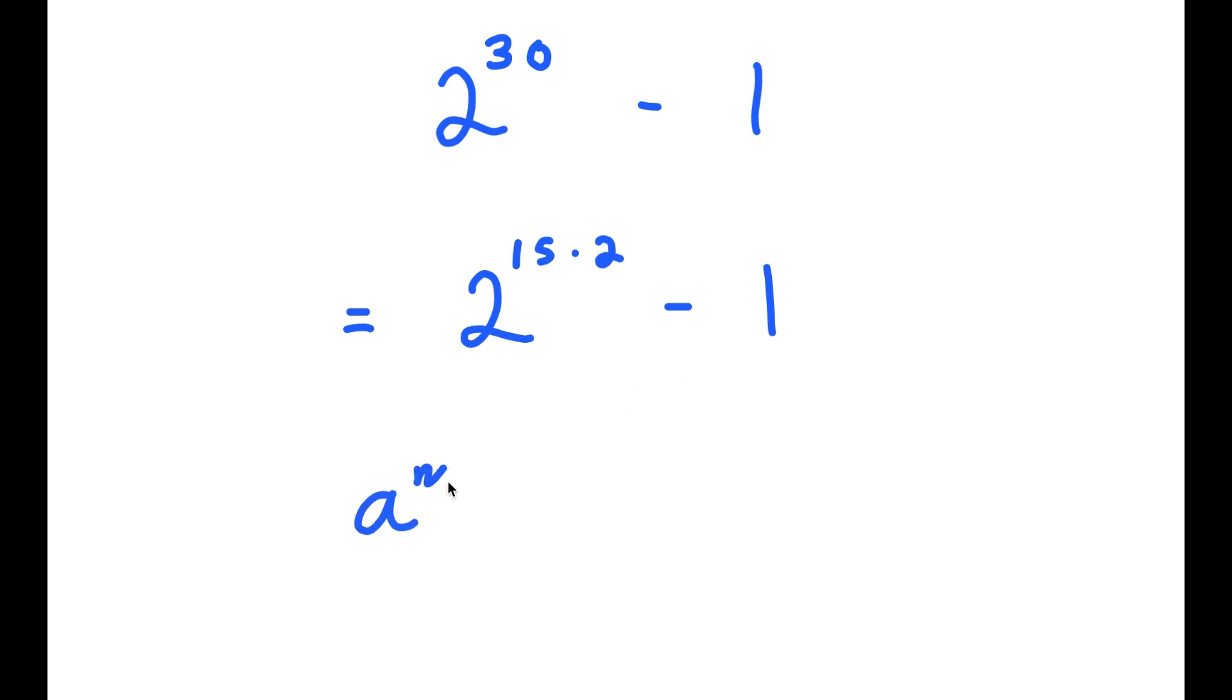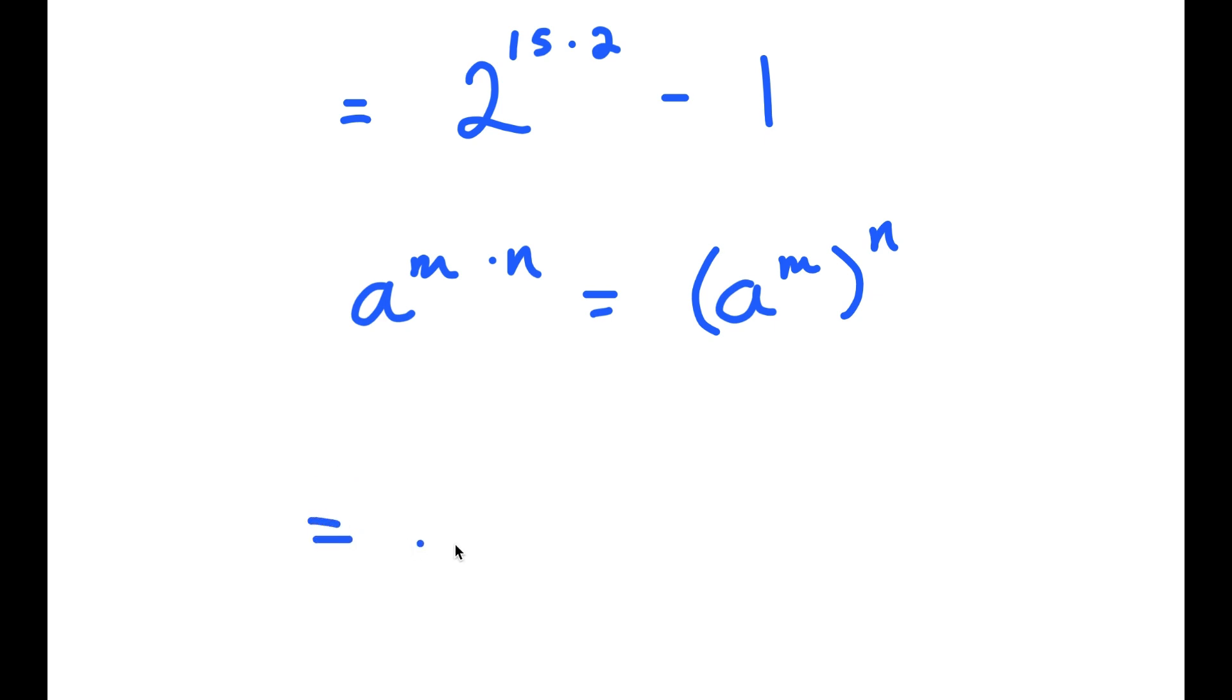Now, if I have something of the form a to the power of m times n, this is equal to a to the power of m to the power of n. So 2 to the power of 15 times 2 is the same thing as 2 to the power of 15 to the power of 2.